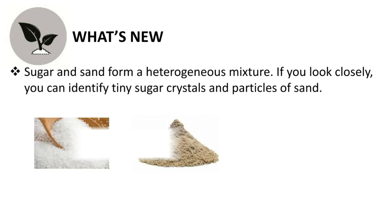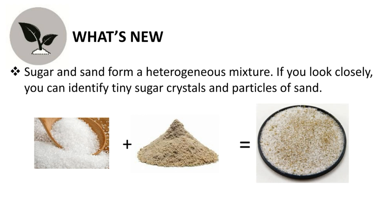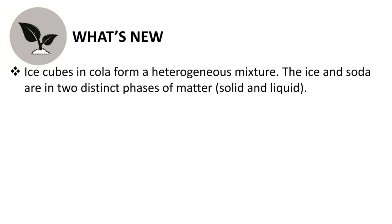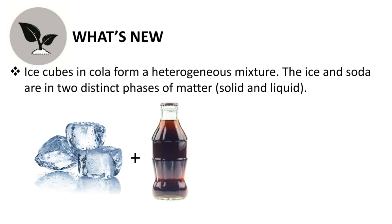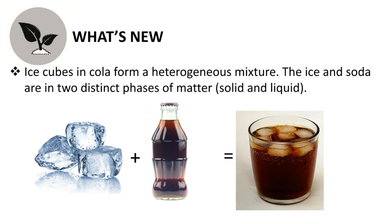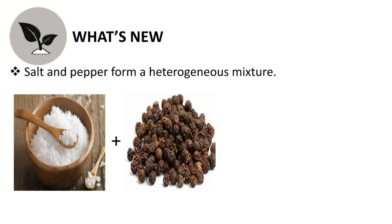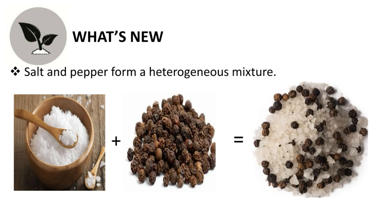Sugar and sand form a heterogeneous mixture — if you look closely, you can identify tiny sugar crystals and particles of sand. Ice cubes in cola also form a heterogeneous mixture; the ice and soda are in two distinct phases of matter — solid and liquid. Salt and pepper form a heterogeneous mixture too, because you can identify the pepper and the salt in it.